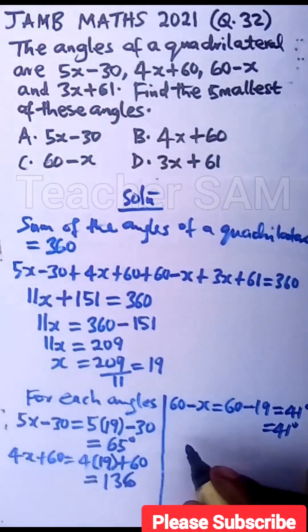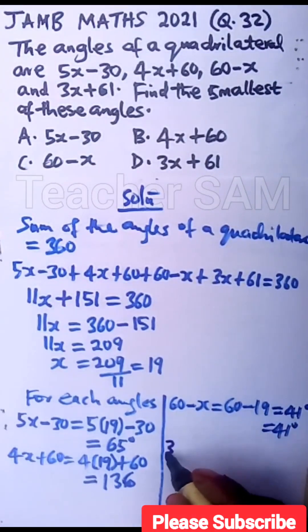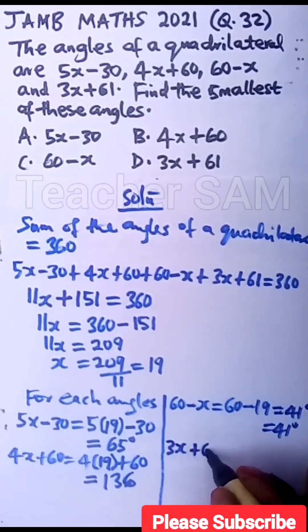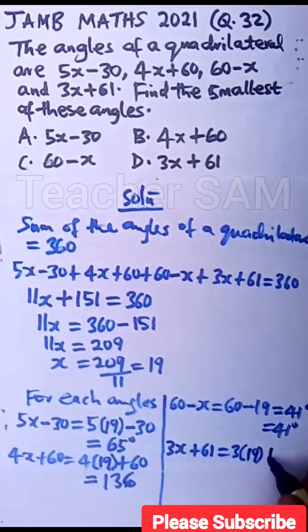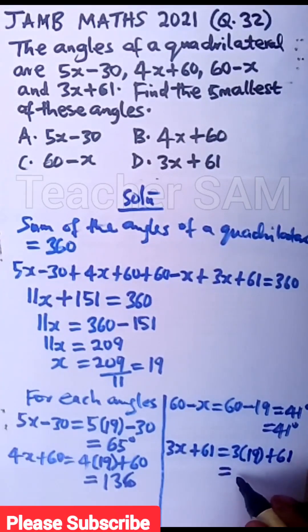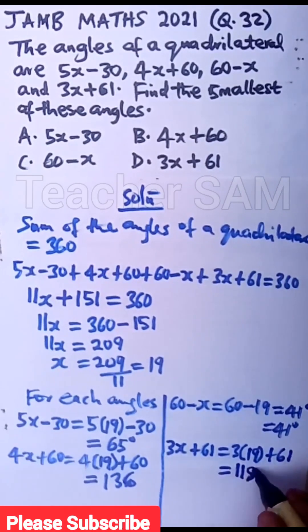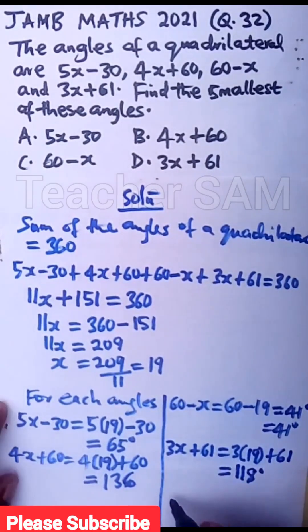Now let's move to the last angle we have there, which is 3x plus 61. So that would be 3 into 19 plus 61. So when you do that correctly, you have 118 degrees.